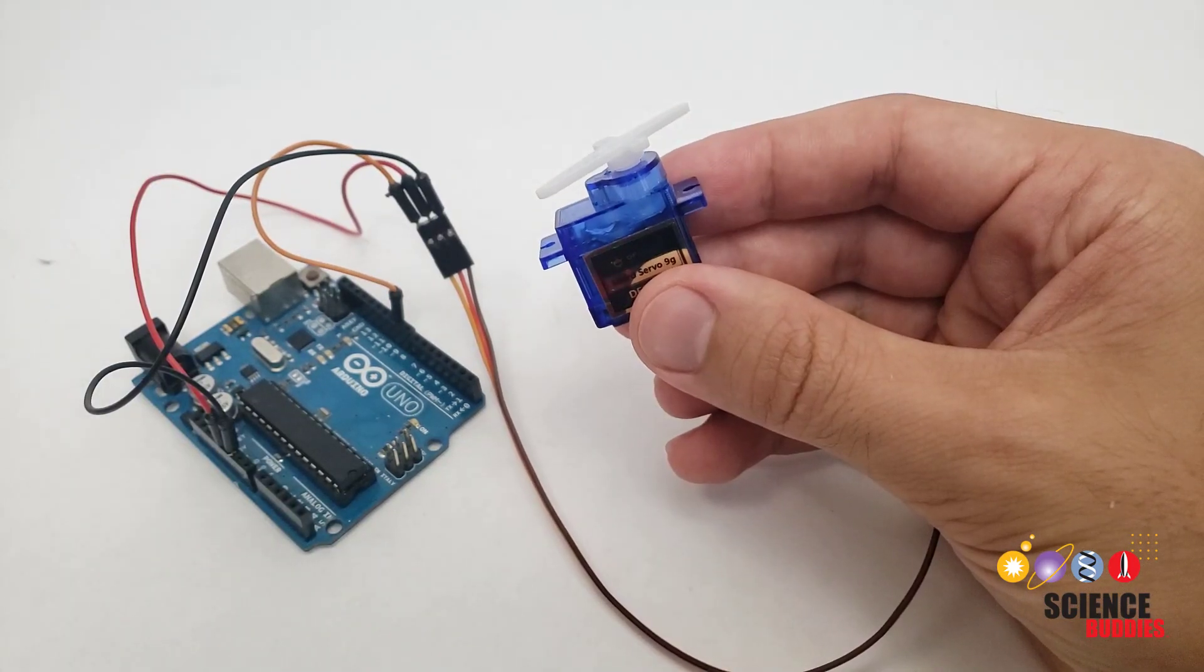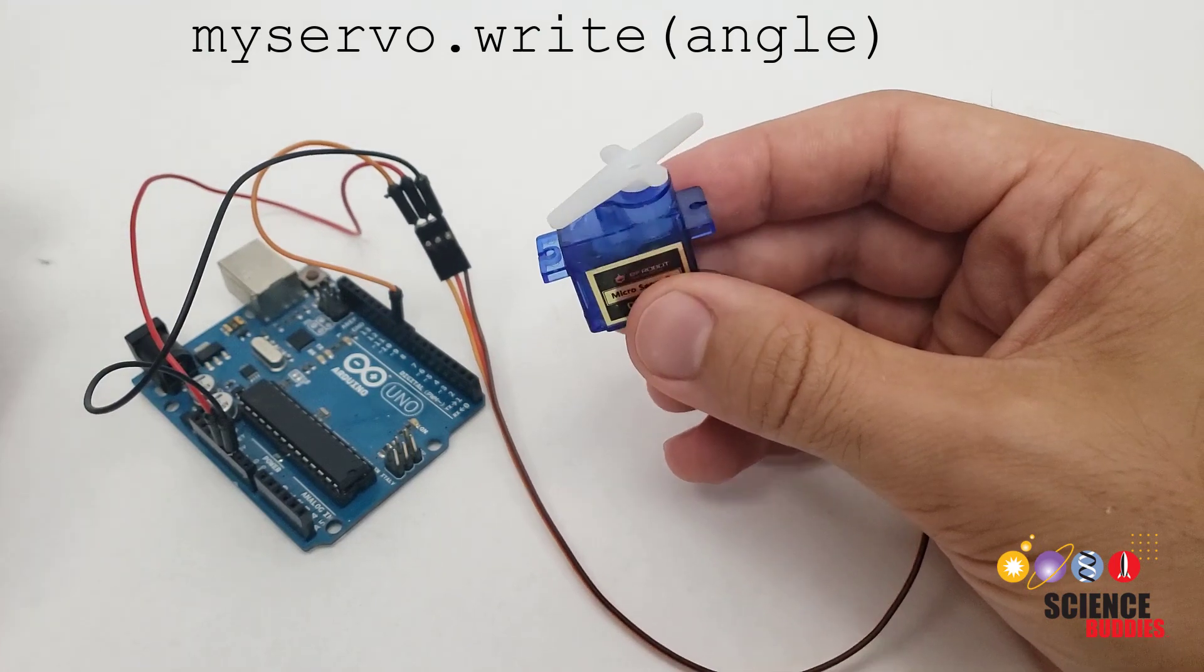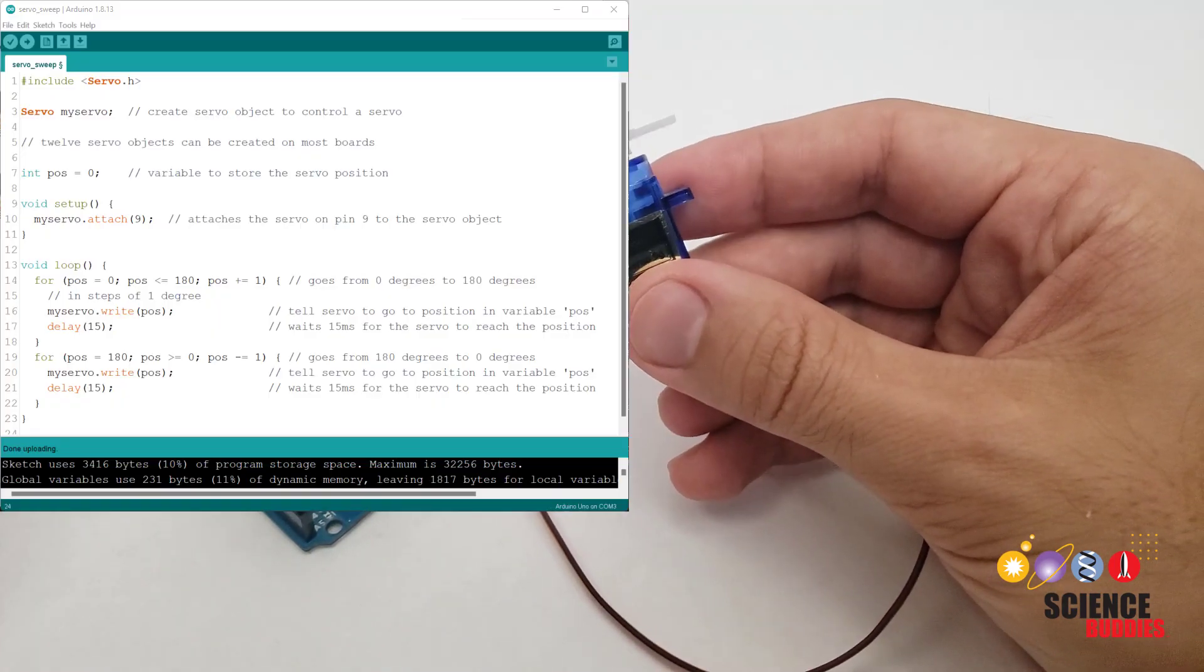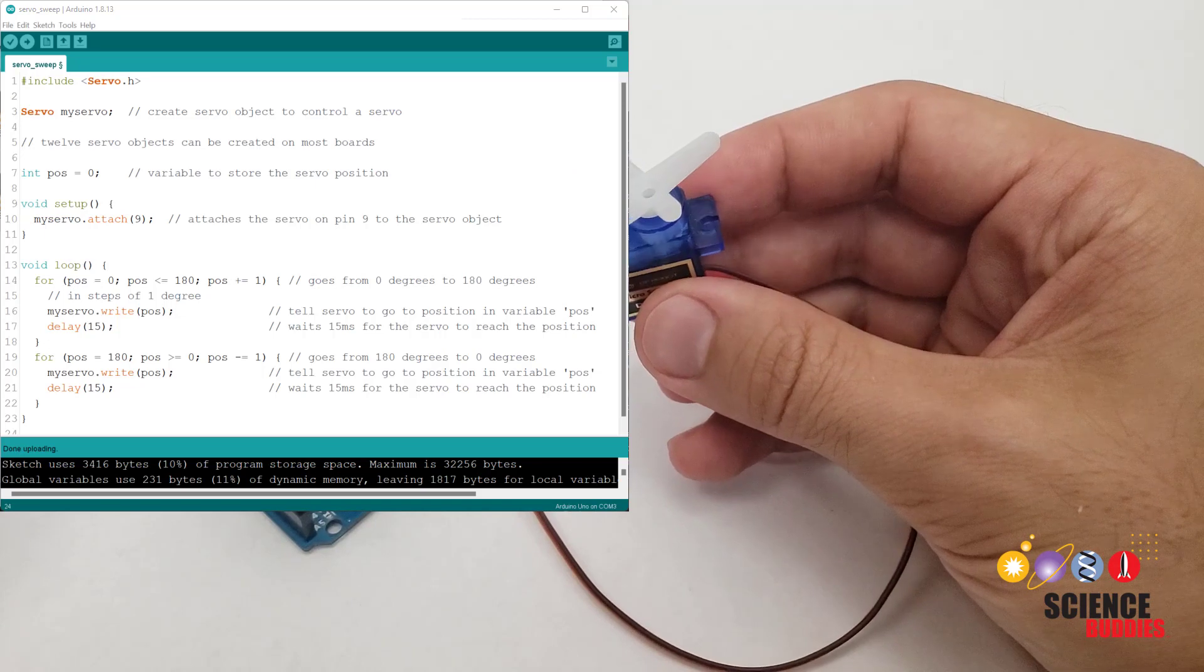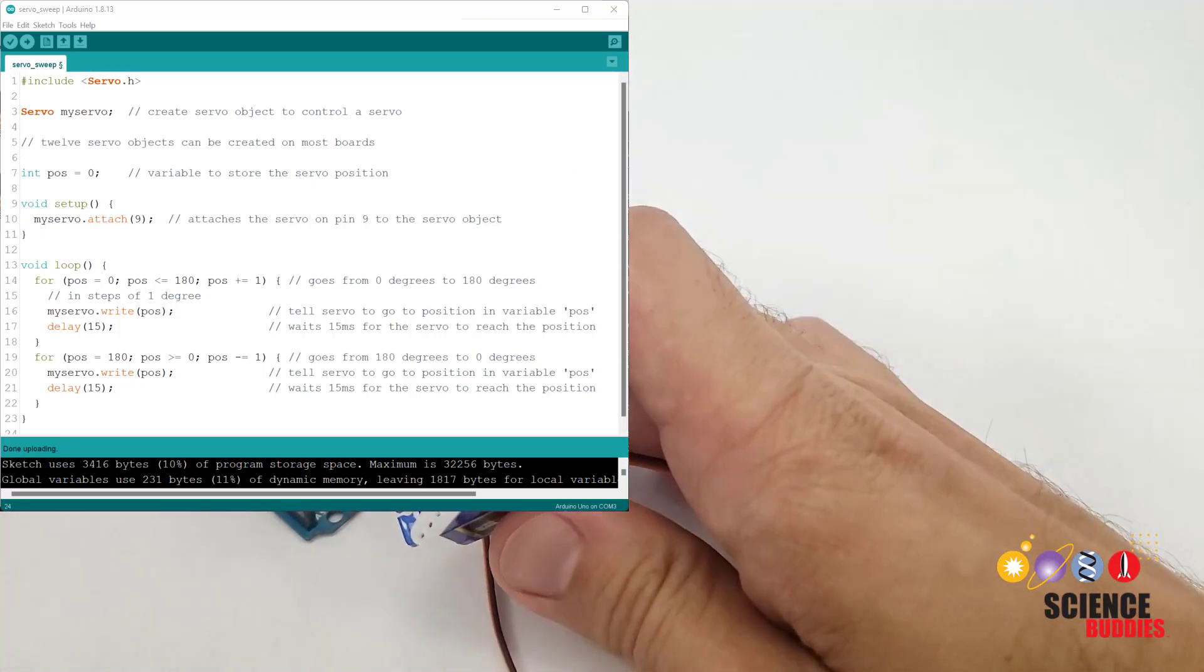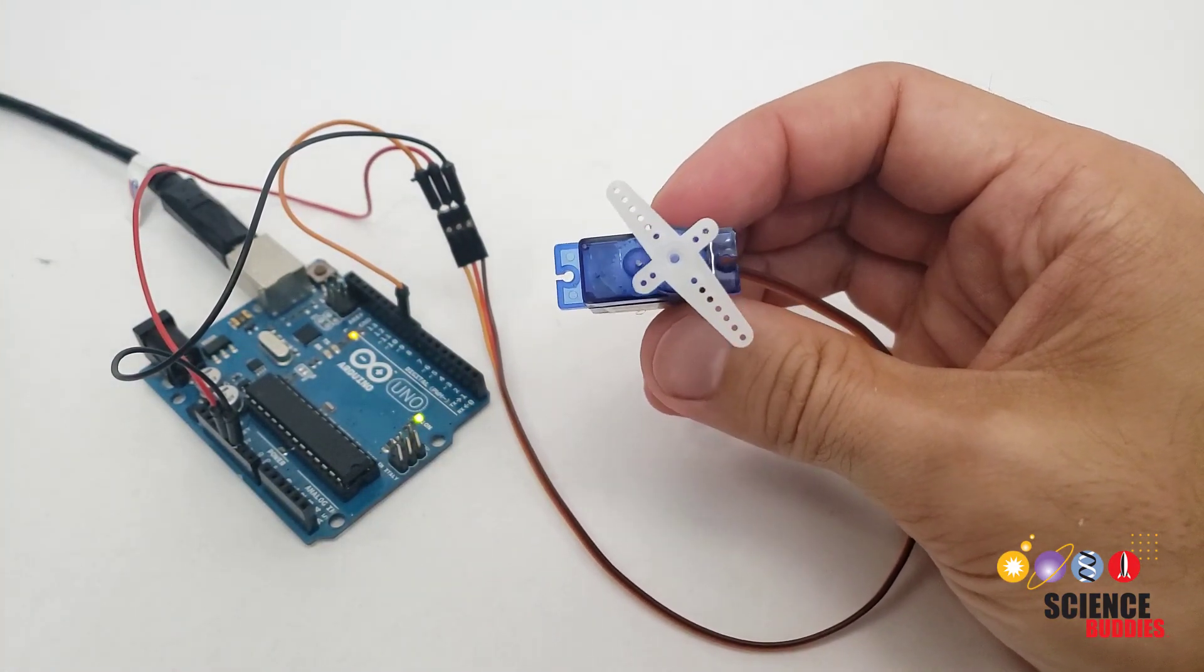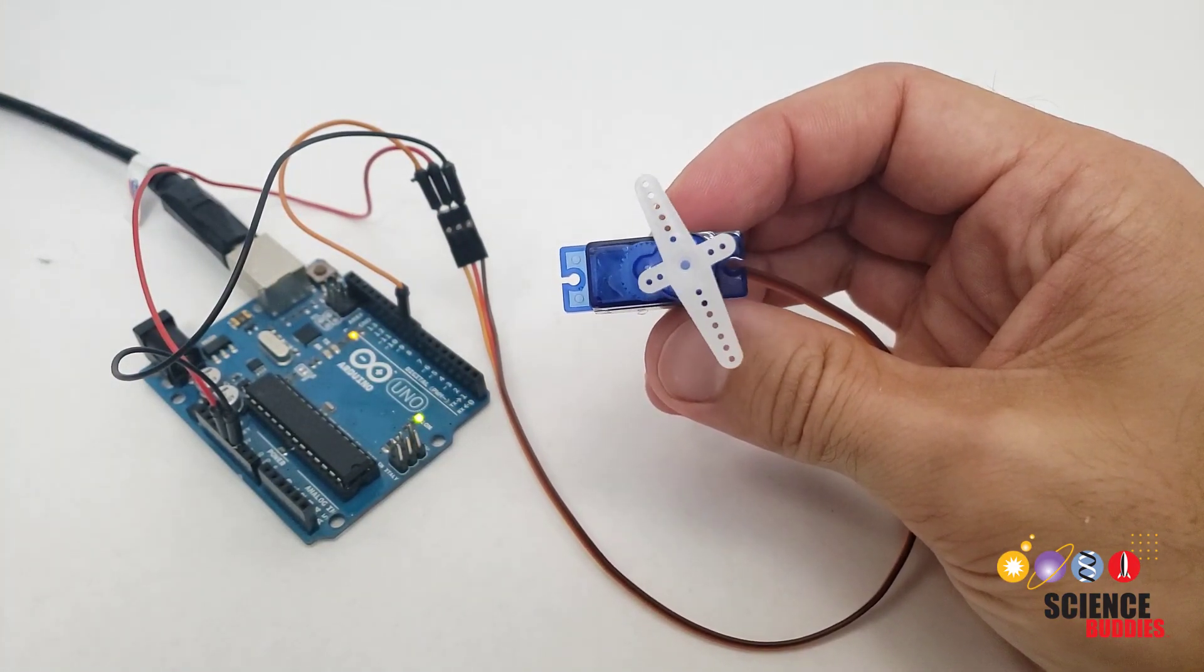The Arduino servo library uses a write command to send an angle between 0 and 180 degrees to the servo. I have an example program loaded from the Arduino website that is simply going to linearly sweep back and forth between 0 and 180 degrees. So when I power my Arduino up, we should see my servo automatically oscillate between those two positions.